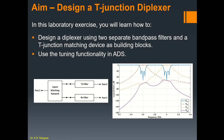Welcome back to my YouTube channel. Today I'll be showing you how to design a T-junction diplexer by first designing two separate filters. Looking at this diagram, you can see a transmit filter TX, a receive filter RX, and then I've linked the two filters with a three-port matching network. For today I'll be using a T-junction, but you may also use a circulator, Y-junction, or a common resonator.